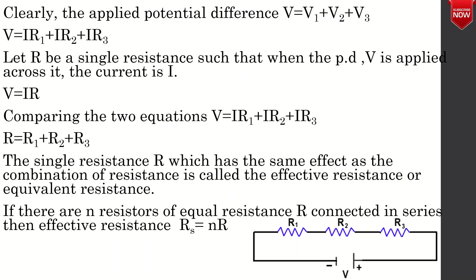Clearly, the applied potential difference V is equal to V1 plus V2 plus V3. Therefore, V = IR1 + IR2 + IR3. Let R be a single resistance such that when the potential difference V is applied across it, the current is I. So, V = IR.